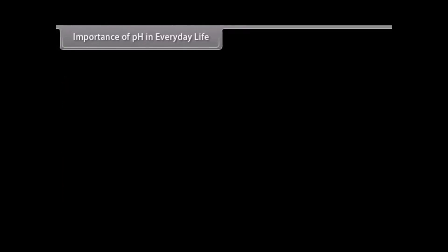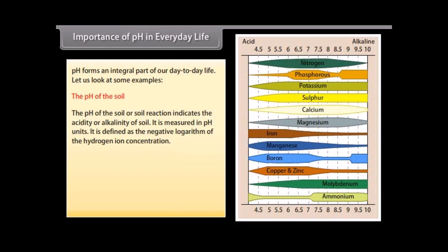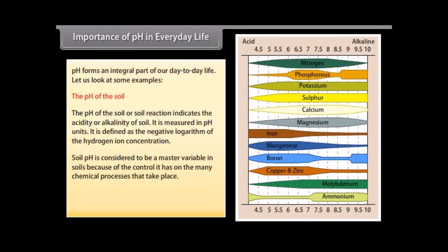Importance of pH in everyday life. The pH of the soil, or soil reaction, indicates the acidity or alkalinity of soil. It is measured in pH units and is defined as the negative logarithm of the hydrogen ion concentration. With the increase in the amount of hydrogen ions in the soil, the soil pH also increases, leading to being more acidic. Soil pH is considered a master variable in soils because of the control it has on many chemical processes.